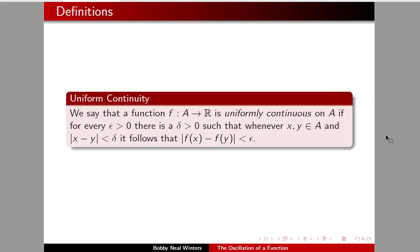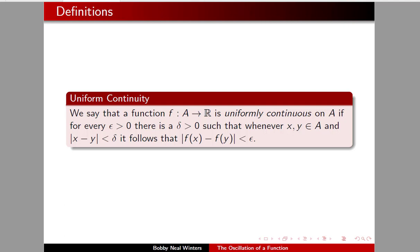Let's now segue to a new but related concept: that of uniform continuity. We say that a function f from A to ℝ is uniformly continuous on A if for every ε > 0 there is a δ > 0 such that whenever x and y are elements of A and |x - y| < δ, it follows that |f(x) - f(y)| < ε. A function can only be uniformly continuous on a set.